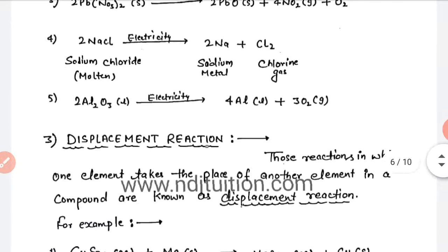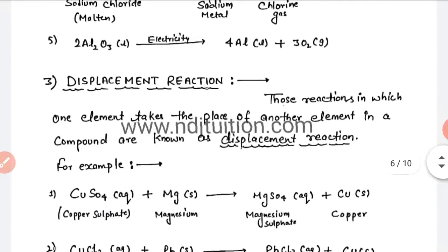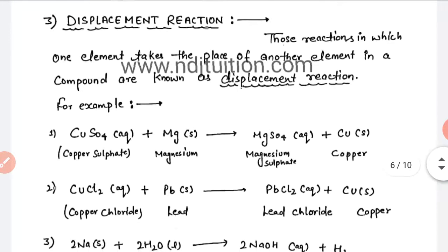The next type of reaction is displacement reaction. Those reactions in which one element takes the place of another element in a compound are known as displacement reactions. For example, CuSO4 plus Mg forms MgSO4 plus Cu. Here, Mg has taken the place of Cu — magnesium displaced copper and formed magnesium sulfate. This type of reaction is called a displacement reaction.